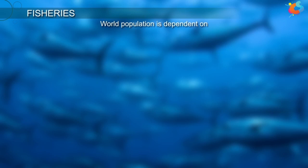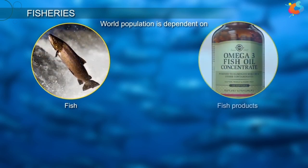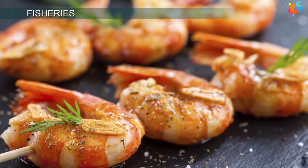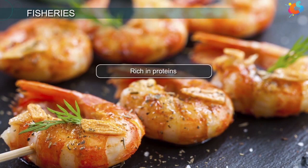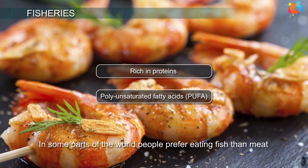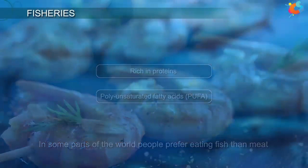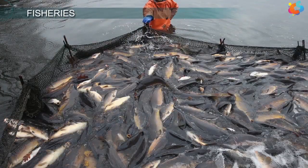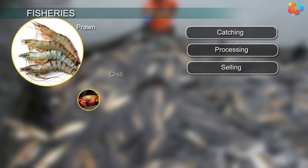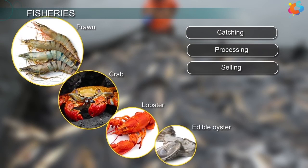Fisheries: A large number of the world population is dependent on fish, fish products and other aquatic animals for food. Fish and other seafood are rich in proteins and polyunsaturated fatty acids (PUFA). In some parts of the world, people prefer eating fish over meat. Today, fishery is considered as an industry. It is concerned with catching, processing or selling of fish and other aquatic animals like prawn, crab, lobster, edible oyster, etc.